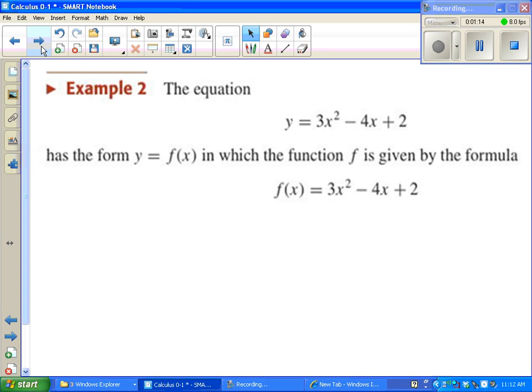y equals 3x squared minus 4x plus 2. We could rewrite that in function notation by just changing the y to an f(x). Because x is the only variable, we can say this is a function of x.